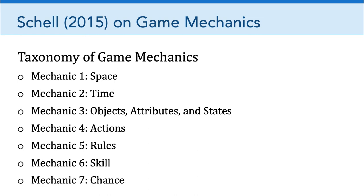The seventh game mechanic Shell discusses is chance. Chance is an essential part of games because chance means uncertainty, and uncertainty means surprises. Shell talks about how surprises are an important source of human pleasure and one of the ingredients of making something fun. All of you programmed a certain level of chance into your Lemonade Stand simulations, so think about how the mechanic of chance plays out in other games as well.